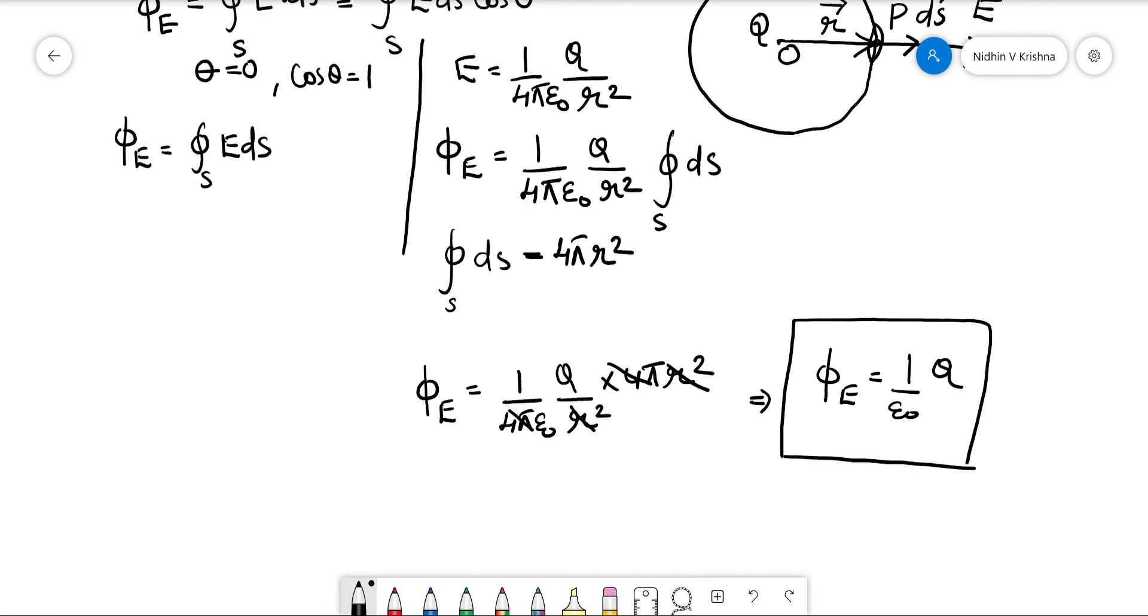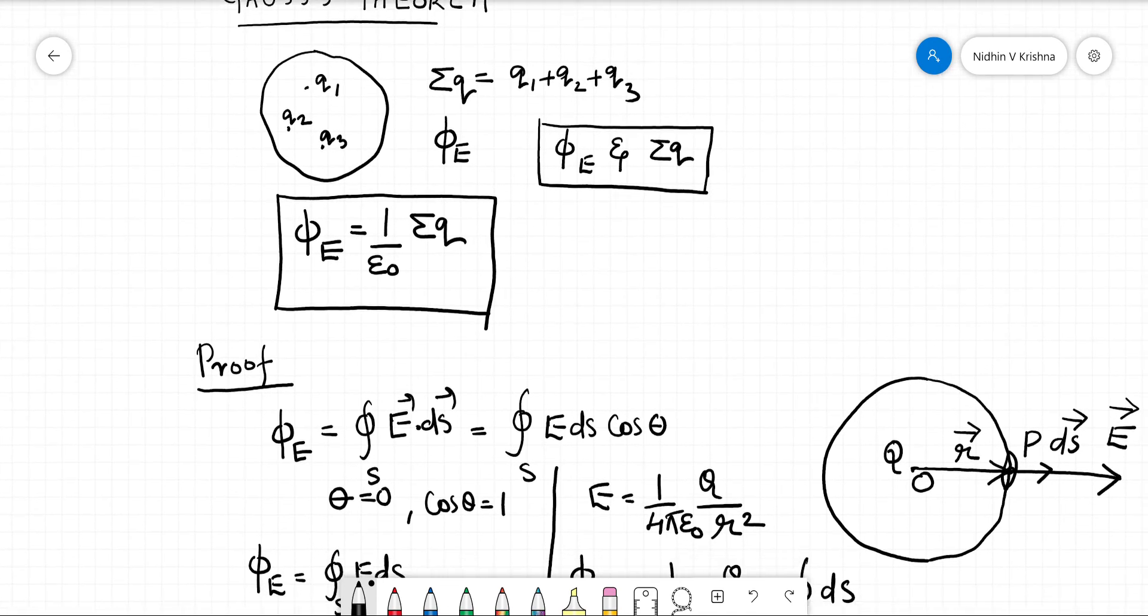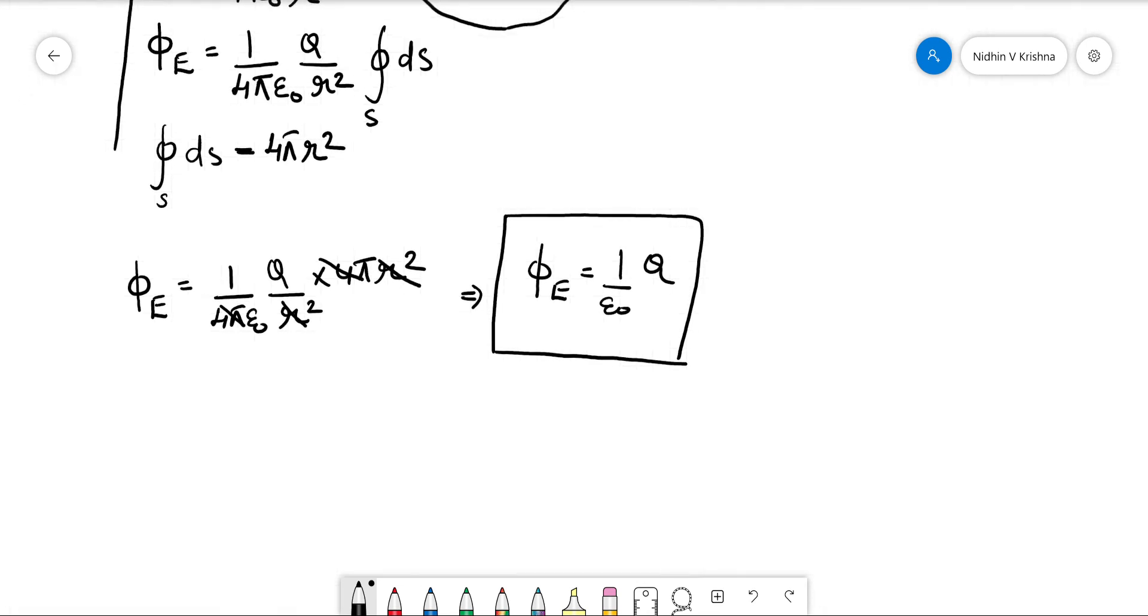You can see above what my statement was: phi_E equal to 1/ε₀ times total charge enclosed. And here our final proof is there, and in that also same result we got. That's all from my end.